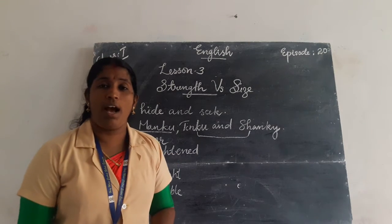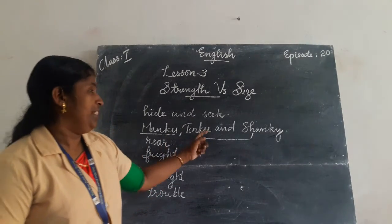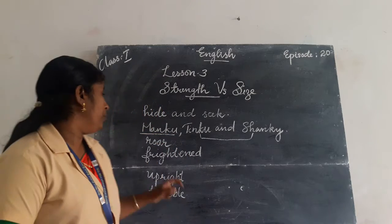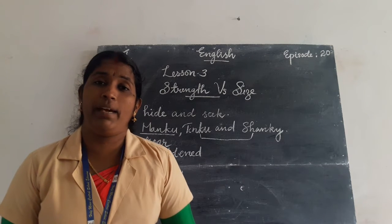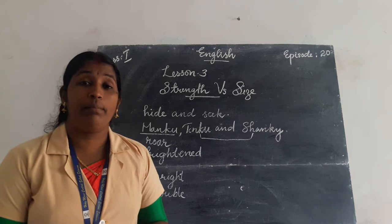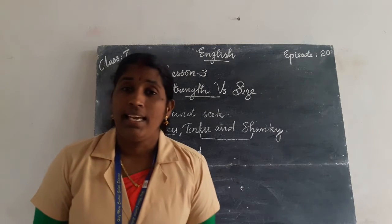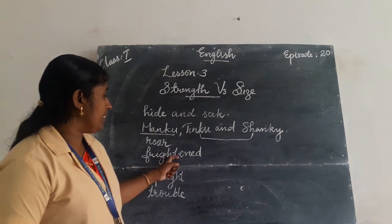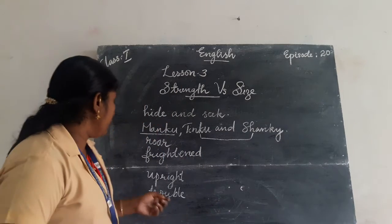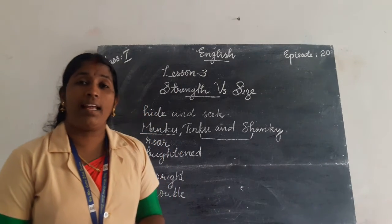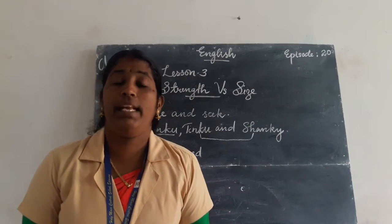Roar — R-O-A-R — means the sound made by a lion. The next one is frightened — F-R-I-G-H-T-E-N-E-D — frightened means scared; they became very scared. The next one is upright — U-P-R-I-G-H-T — upright means held in the right position. The next one is trouble — T-R-O-U-B-L-E — he may be in some trouble.